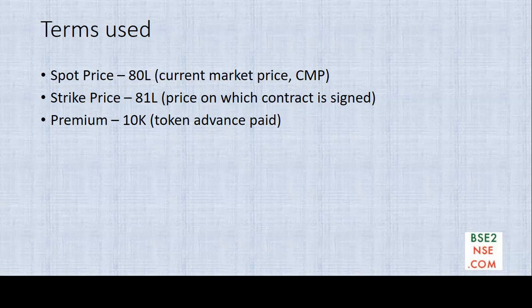Premium: this is the 10,000 token advance paid by the investor to the builder. Quantity: the buyer planned to buy just one house, but in the case of stock or index options it is done in lots. The size of the lot is determined by the exchange based on the contract size, and it will be adjusted — incremented up or brought down — based on changes in the stock or index price. The exchange takes care of these things.